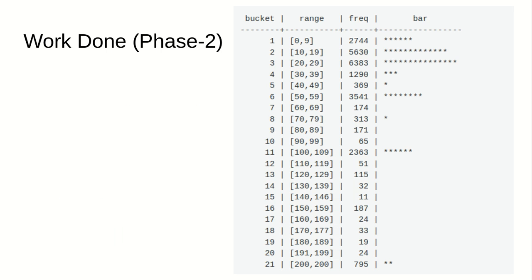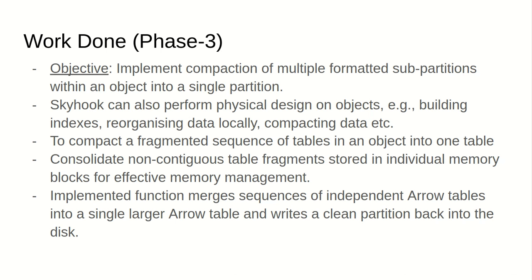This is how the histogram looks. It takes input as the table name, the column name, the maximum and the minimum value of the column, and a selectivity parameter, which is essentially the number of rows we want to run a function on. It basically ranges between 0 to 1.